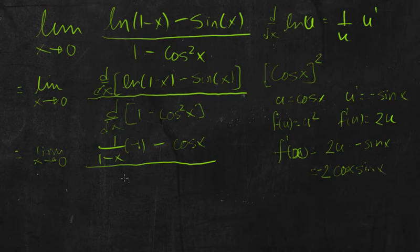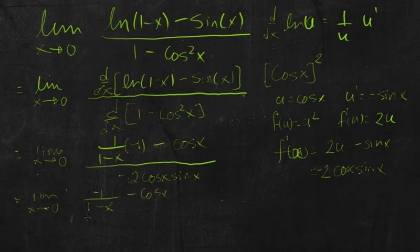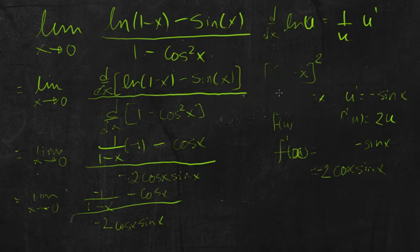Alright, so that goes here on the bottom: negative 2 cos x sine x. So, the limit as x goes to 0. Now, we can simplify this a little bit. Negative 1 over 1 minus x minus cos x, all over negative 2 cos x sine x. And now, I'll erase this stuff over on the side to give myself a bit more space.